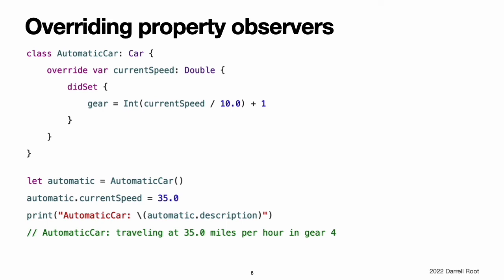Overriding Property Observers. You can use property overriding to add property observers to an inherited property. This enables you to be notified when the value of an inherited property changes, regardless of how that property was originally implemented. For more information on property observers, see Property Observers. Note: you cannot add property observers to inherited constant stored properties or inherited read-only computed properties. The value of these properties cannot be set, and so it is not appropriate to provide a willSet or didSet implementation as part of an override. Note also that you cannot provide both an overriding setter and an overriding property observer for the same property. If you want to observe changes to a property's value, and you are already providing a custom setter for that property, you can simply observe any value changes from within the custom setter.